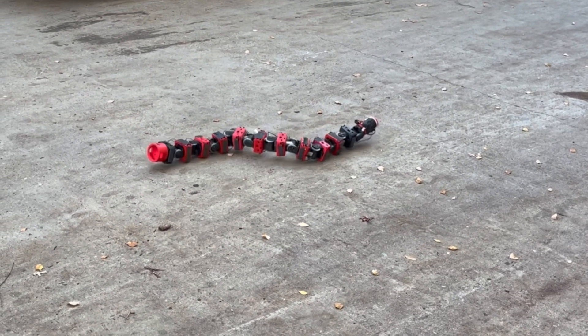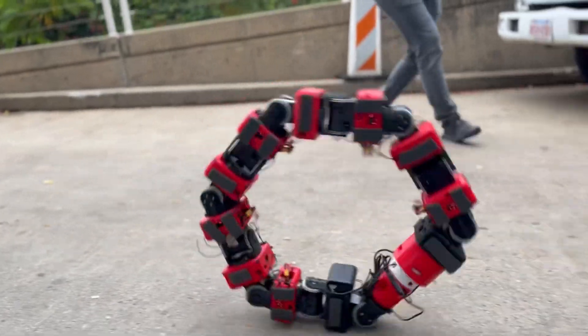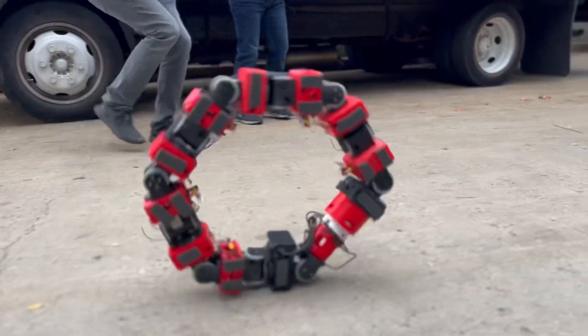To traverse the terrain, Cobra will sidewind to travel through the lunar regolith and tumble down steep crater slopes, allowing it to cover large distances with minimal power consumption.